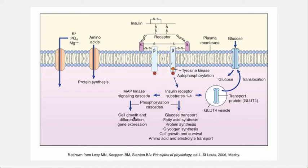Cellular differentiation, growth, and gene expression all happen as a result of this glucose coming into the cell. Also, amino acids required for protein synthesis come in through the cell membrane when the insulin receptor is activated. And when somebody is hyperkalemic in an emergency, we can give insulin to transport potassium intracellularly — that happens through this same mechanism. Glucose comes in through the GLUT4 receptor, which also activates the potassium transport mechanism that brings potassium intracellularly.